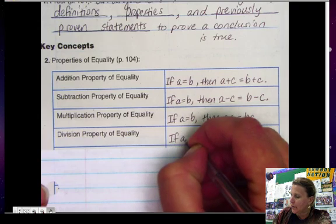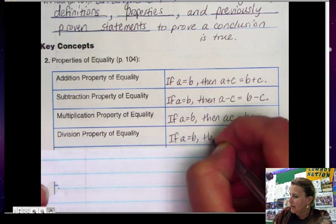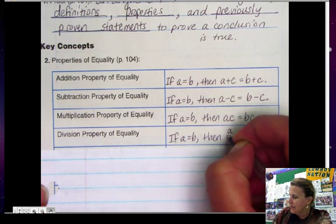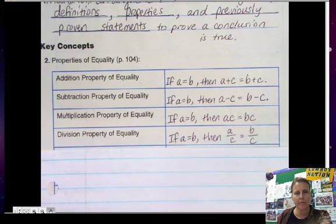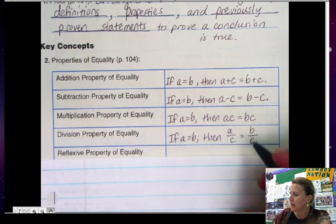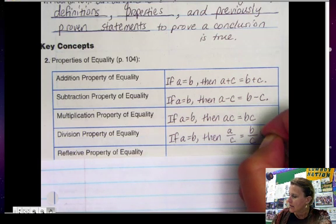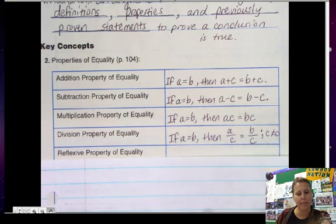Division, same thing but dividing. If a equals b then a divided by c equals b divided by c. And on this one by the way, c cannot equal zero because you're not allowed to divide by zero.